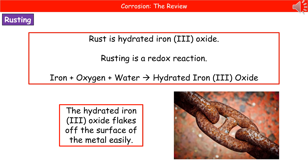When we refer to rusting, we're talking about a redox reaction, and I've given you the word equation there for what's actually happening. We've got our iron, and in the presence of oxygen and water, it forms hydrated iron 3 oxide.